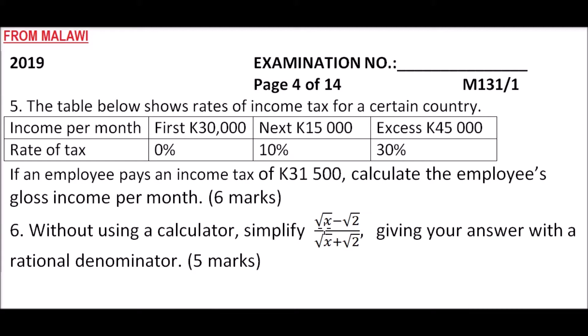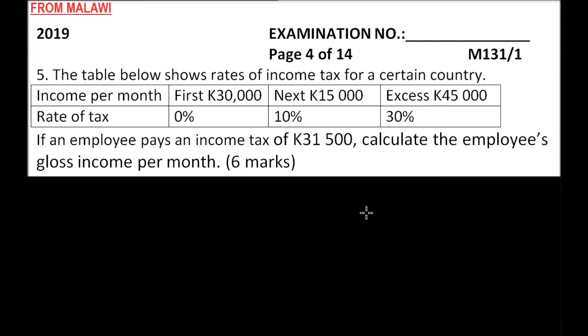Starting with the first question — the first K30,000 is tax-free, so the employee has already gained K30,000. Since the employee was paying tax, they must have exceeded K30,000. We start by noting the employee was already earning K30,000, and we move to the next tax bracket.